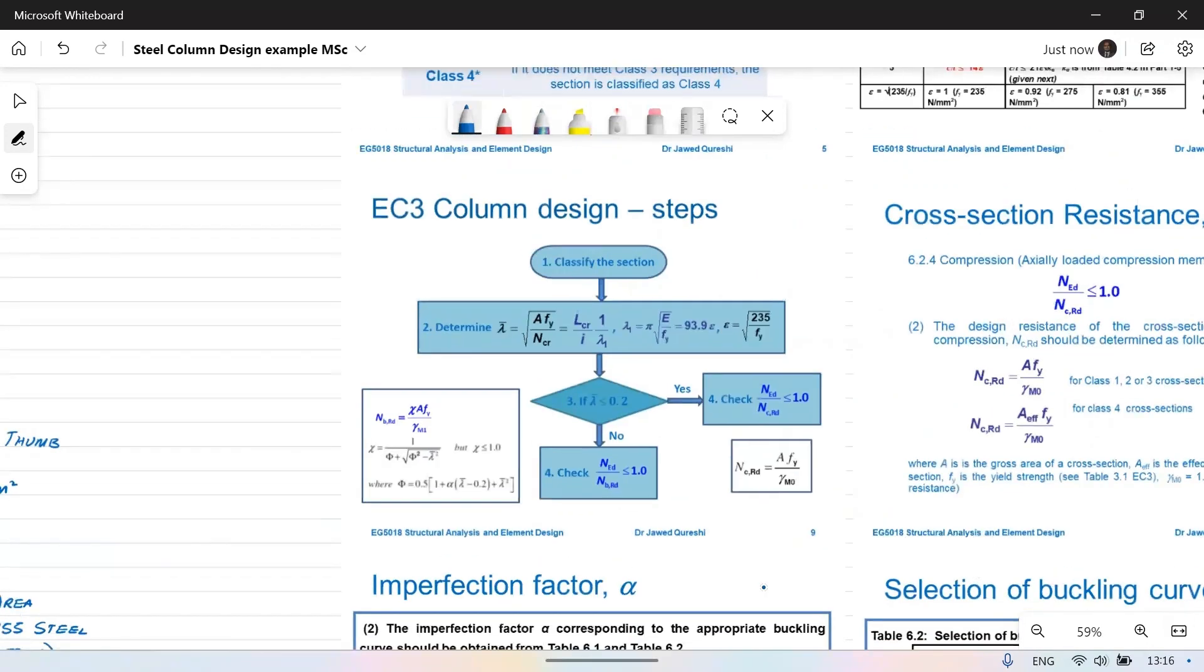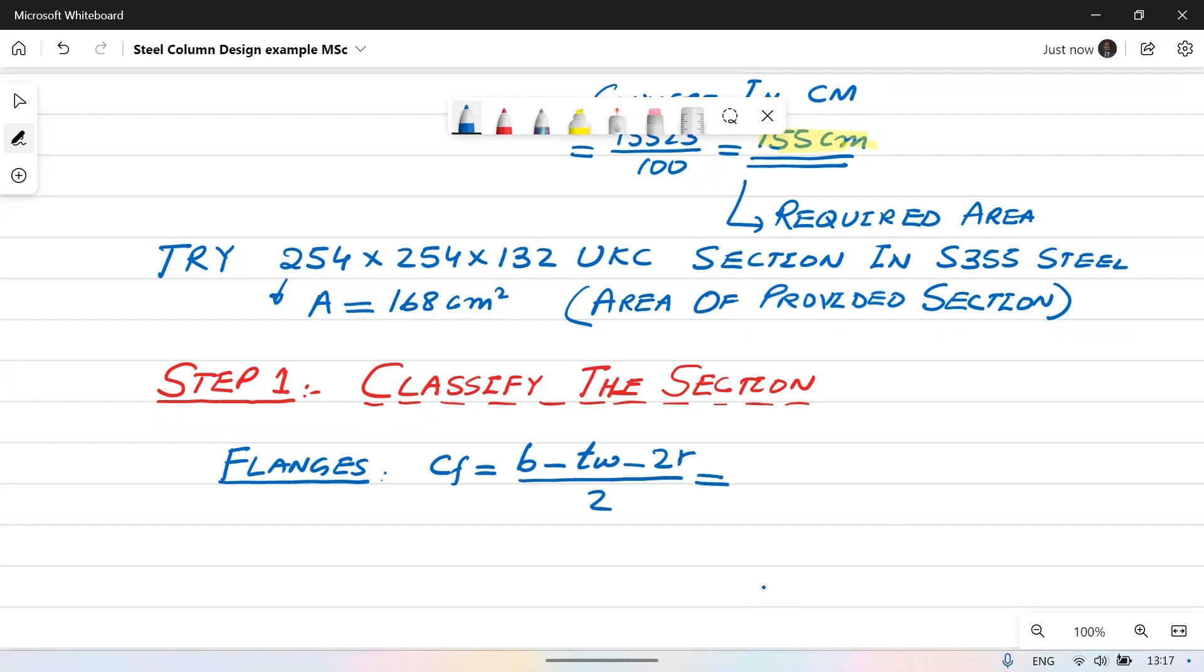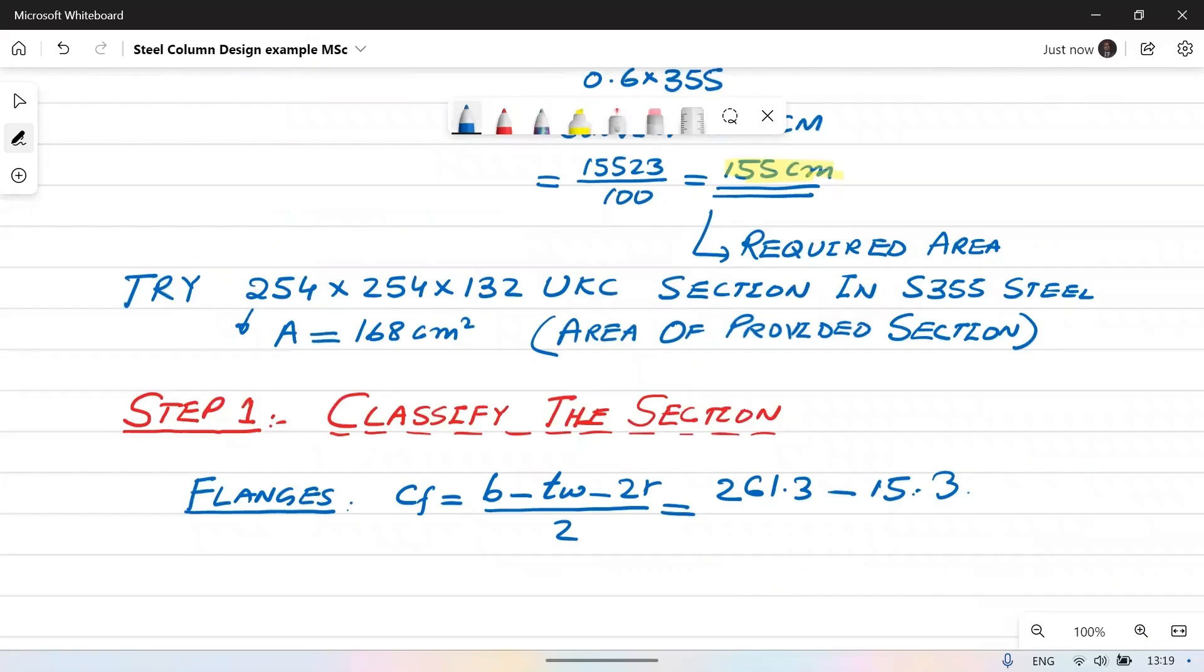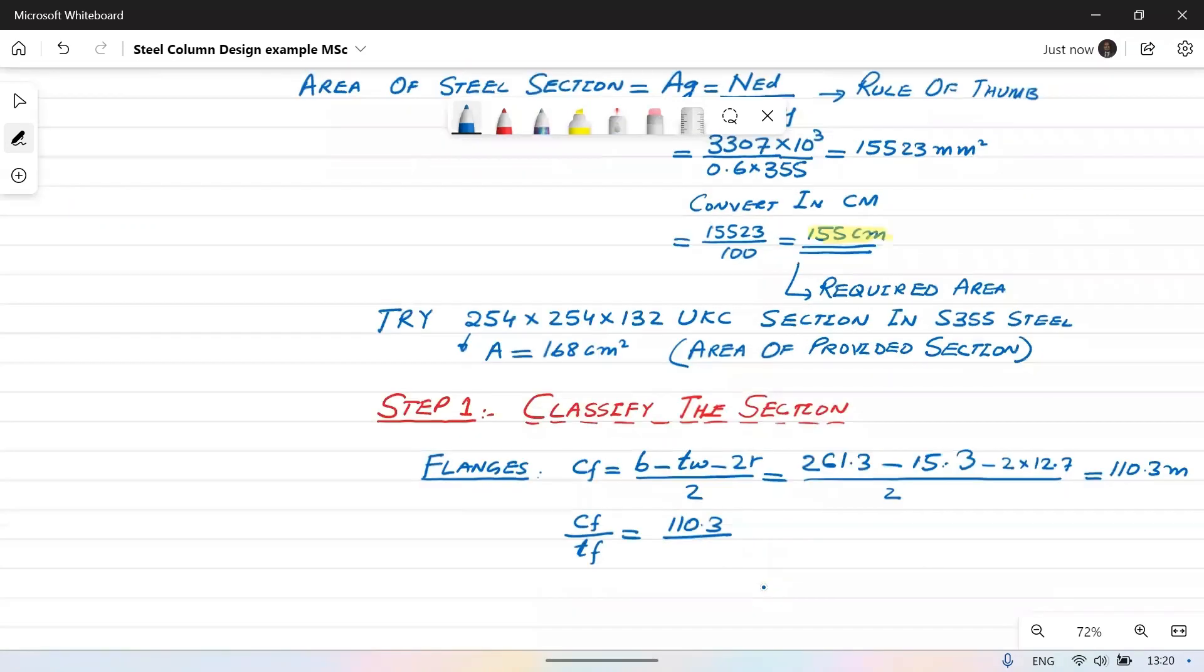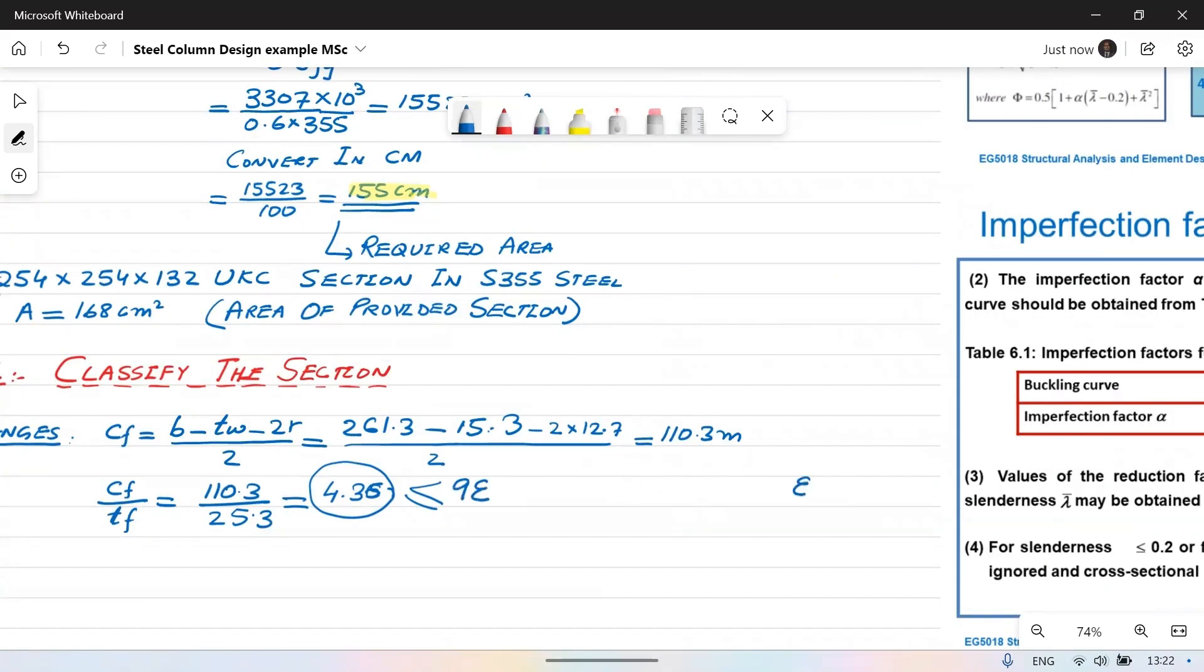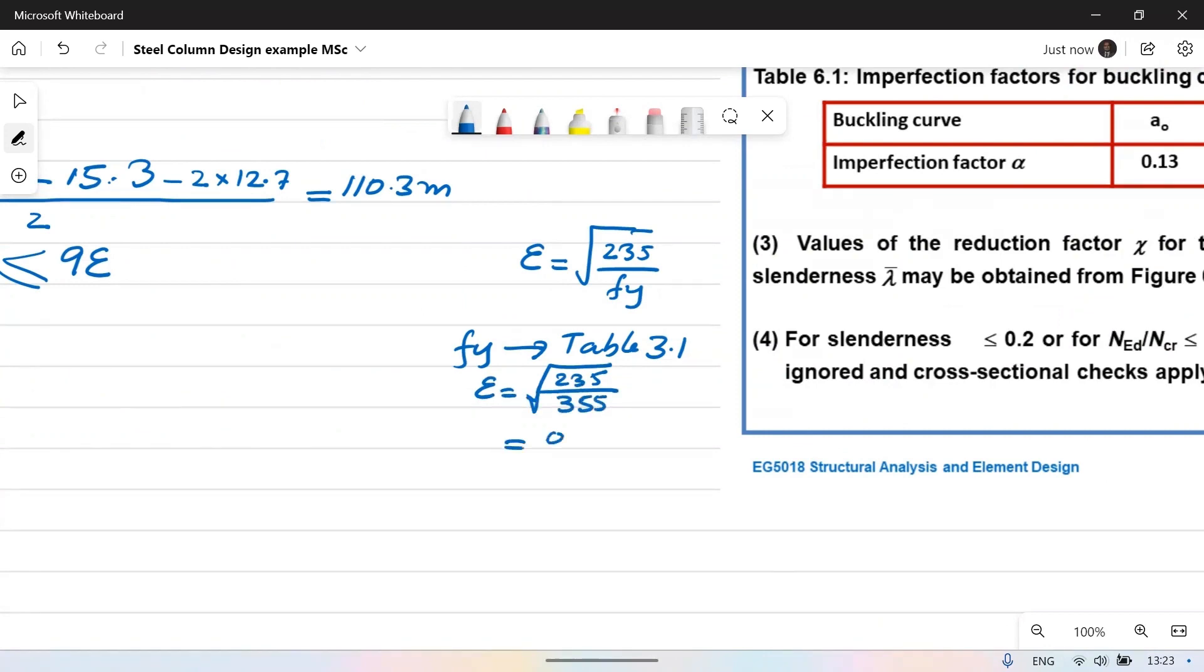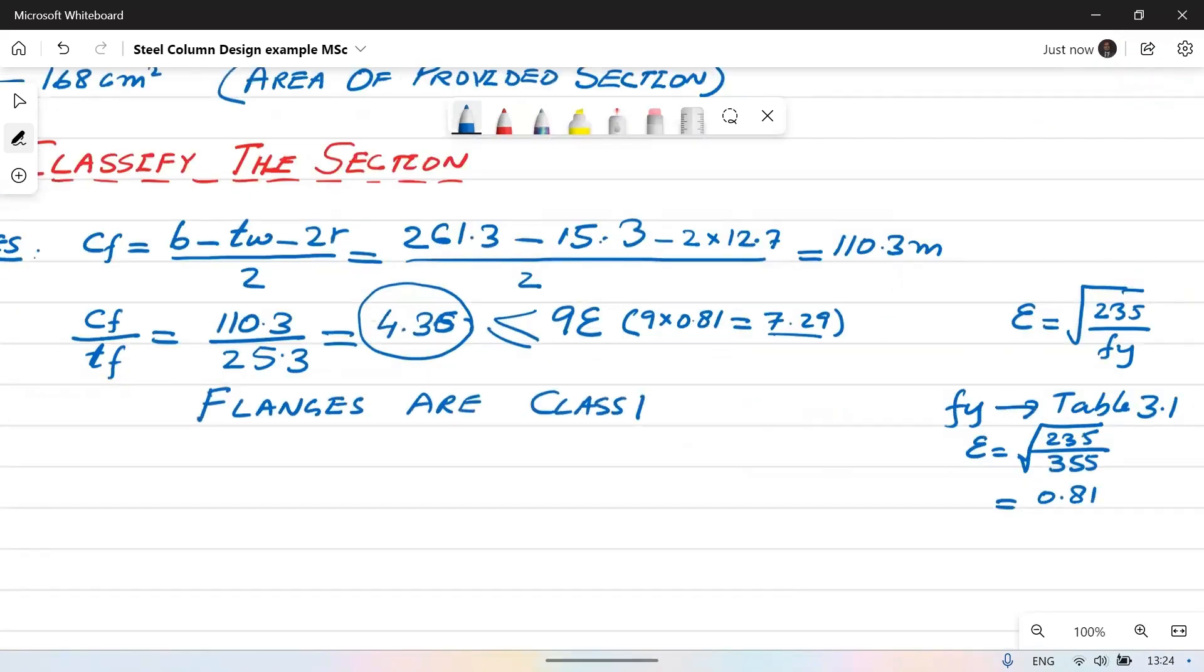As per Eurocode 3 design procedure for compression members the first step is to classify the sections. Now we have the section we will classify it. Let us classify the flanges first. C_F is equal to B minus T_W minus 2R divided by 2. We will get these values from section table. These are the values for B, T_W and R. We will put all these values in C_F and we will work out C_F over T_F which comes out to be 4.36 and we will compare this value with the limiting values. The limiting value for class one flanges is 9 epsilon where epsilon is under root 235 over F_Y. We get F_Y from table 3.1. In that way 9 epsilon comes out to be 7.29. So C_F over T_F is less than 9 epsilon which means flanges are class one.